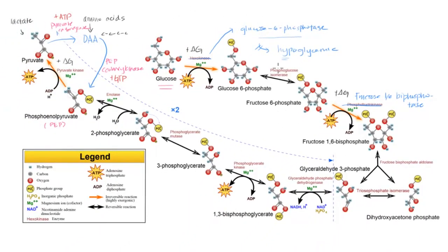As a final word: when first learning about gluconeogenesis and glycolysis, it's tempting to memorize all the molecule and enzyme names. These names can be important when discussing specific diseases, like a deficiency of glucose 6-phosphatase. But conceptually, the key takeaway is that gluconeogenesis and glycolysis are essentially opposites, minus these three irreversible steps — for which the body has created three unique reaction pathways to allow gluconeogenesis to occur.